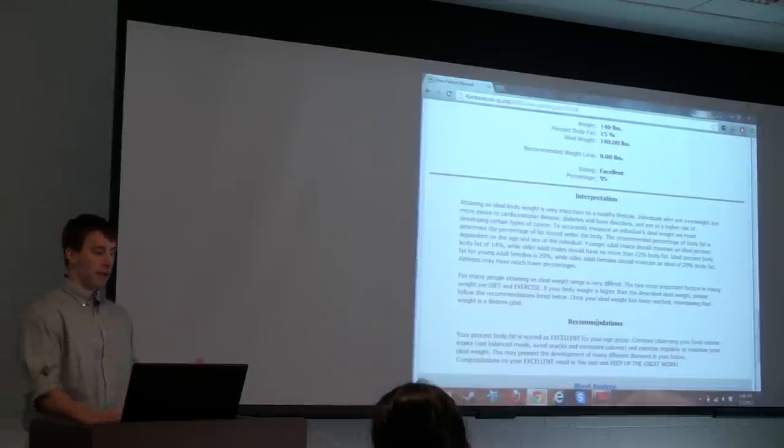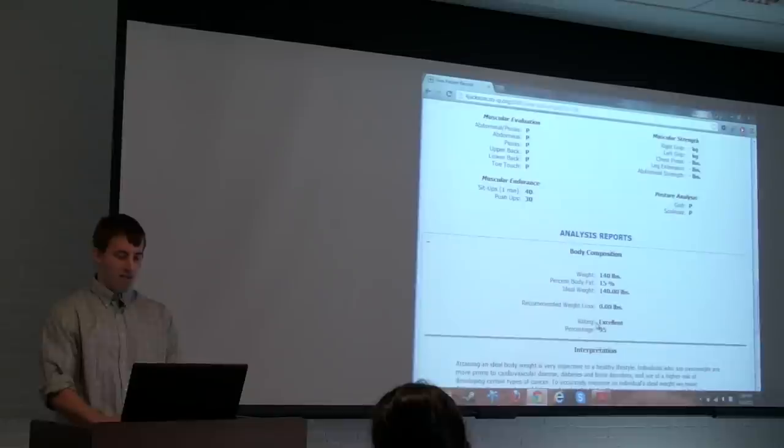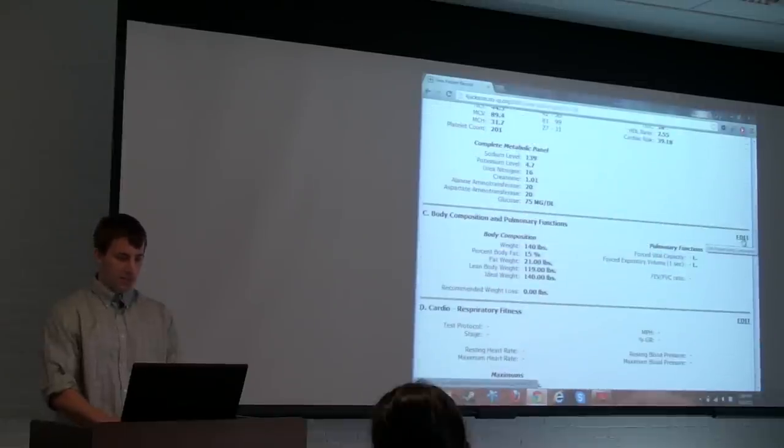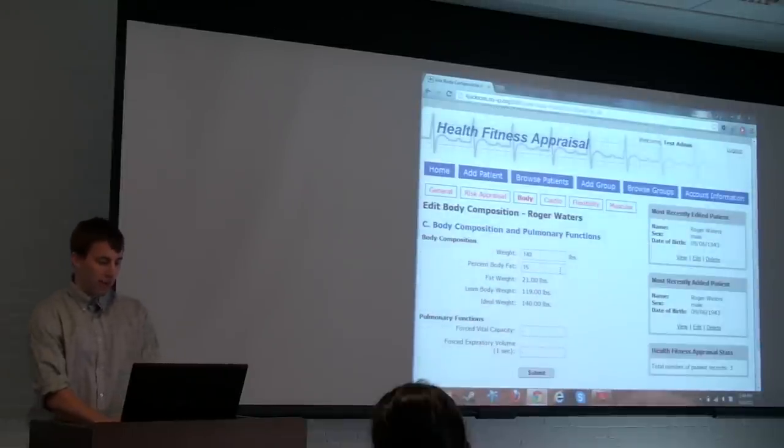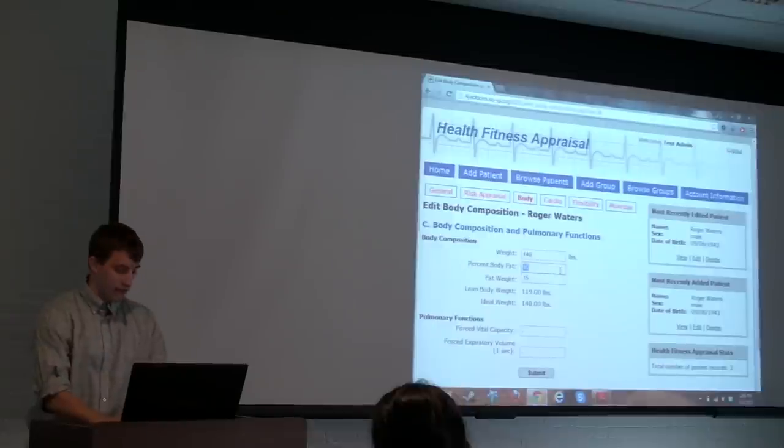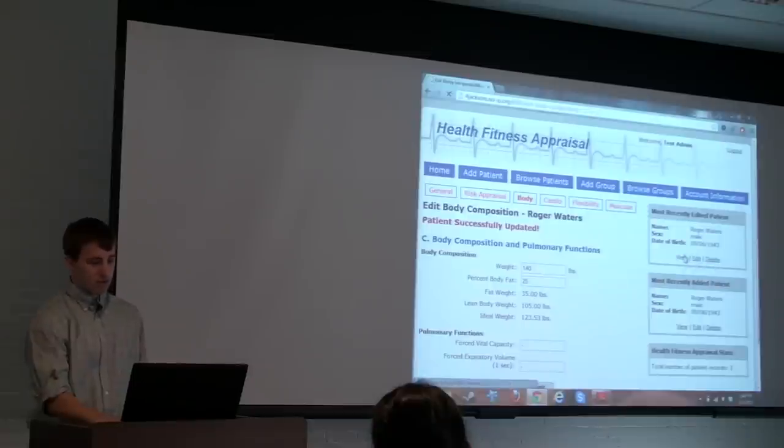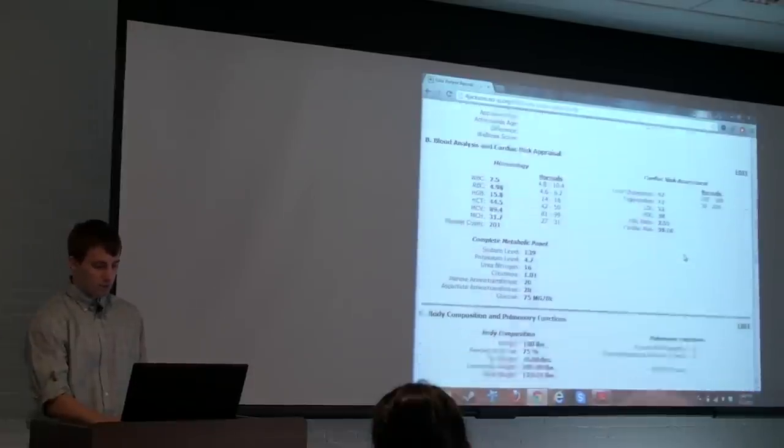Let's say we had a patient who had only a fair rating. So we'll go back and we'll edit Roger Waters' body composition to be something else. We'll go back to the edit page and we're going to change this to 25 percent. Again we'll submit, we see the values have changed. We'll go back and view the patient's fitness report.